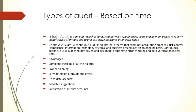We will understand these types one by one. The first one is interim audit. It is an audit which is conducted between two financial years, and its main objective is early identification of threats and taking corrective measures at an early stage.